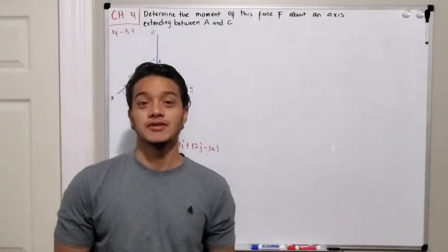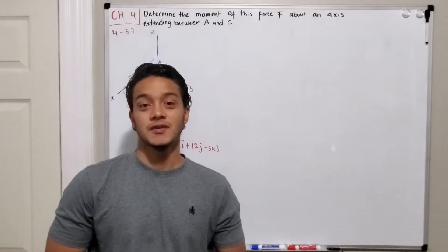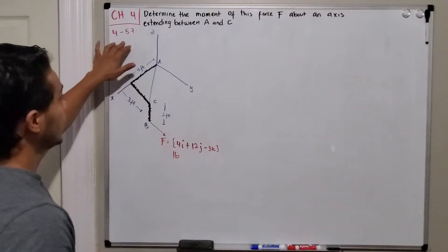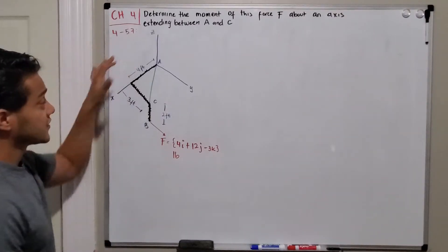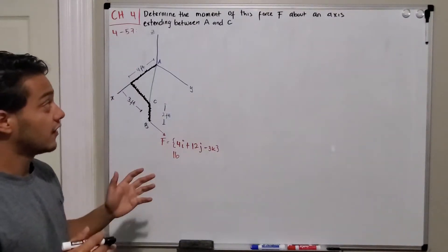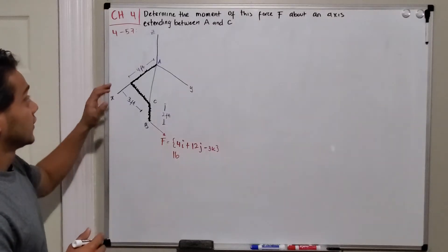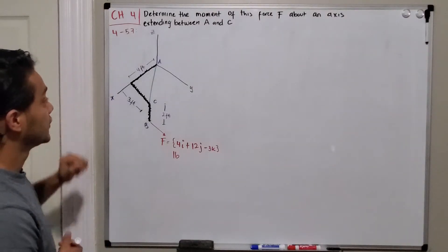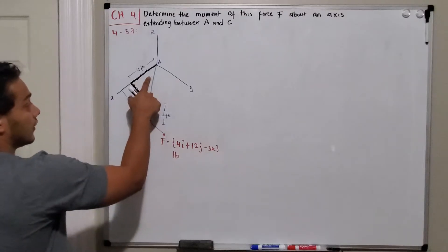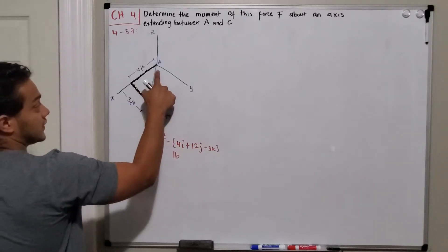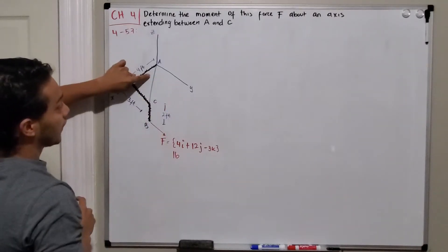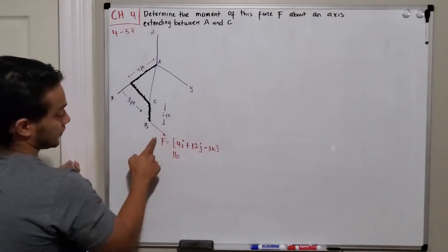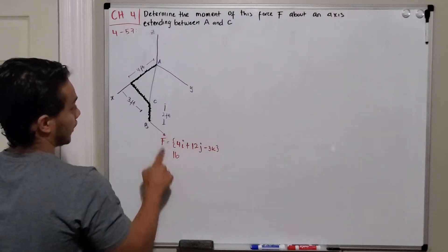Welcome back everyone to Learning by Teaching. We're in statics and we're going to do problem 4.57. It says: determine the moment of this force F about an axis extending between point A and point C. So basically we've got this axis coming from A to C and we need to find what this force is doing about that axis.